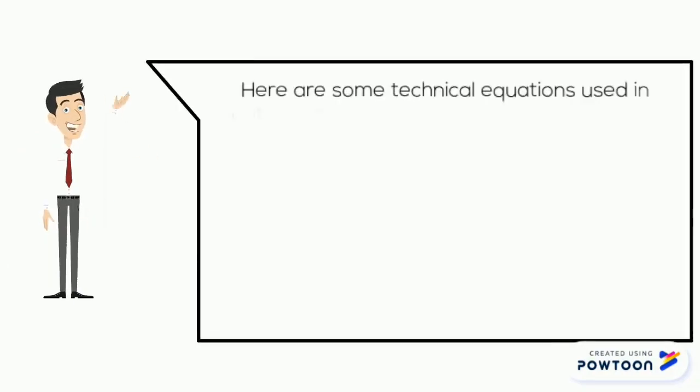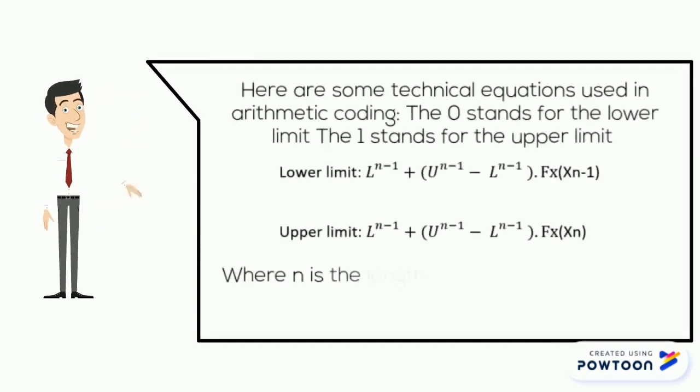Here are some technical equations used in arithmetic coding. The 0 stands for the lower limit, the 1 stands for the upper limit, where n is the length of the sequence and x is the sequence.